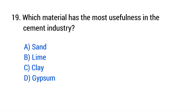Question No. 19: Which material has the most usefulness in the cement industry? The right answer is Option B, Limestone.